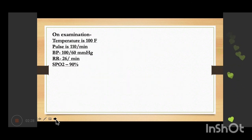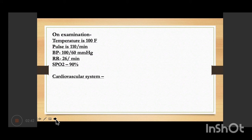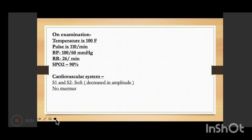On examination, temperature is raised, pulse is raised, BP is 100/60 mmHg, heart rate and respiratory rate are raised, and SpO2 is decreased. On cardiovascular examination, S1 and S2 are soft and decreased in amplitude. There is no murmur. JVP is raised, pericardial rub is absent, and pulsus paradoxus is present.